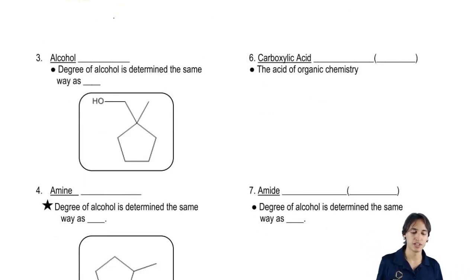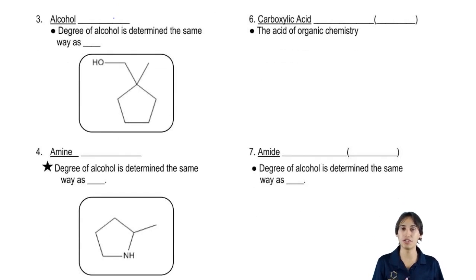So I'm going to go ahead and talk first about functional groups without carbonyls and then we're going to add some carbonyls and see how that changes them. The third one that we're going to talk about today is alcohols.